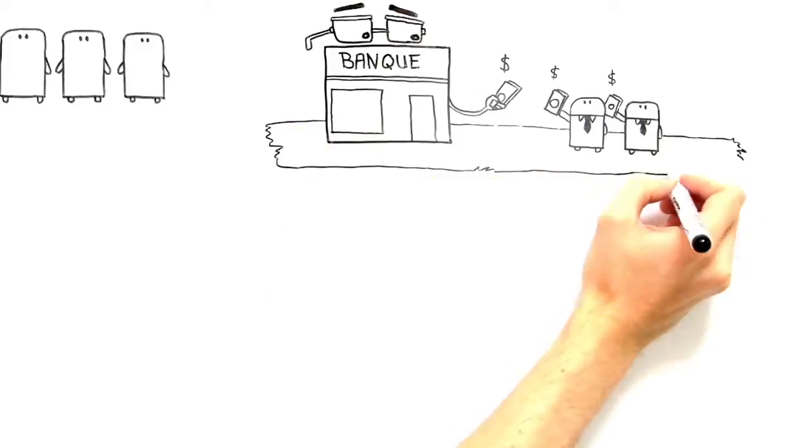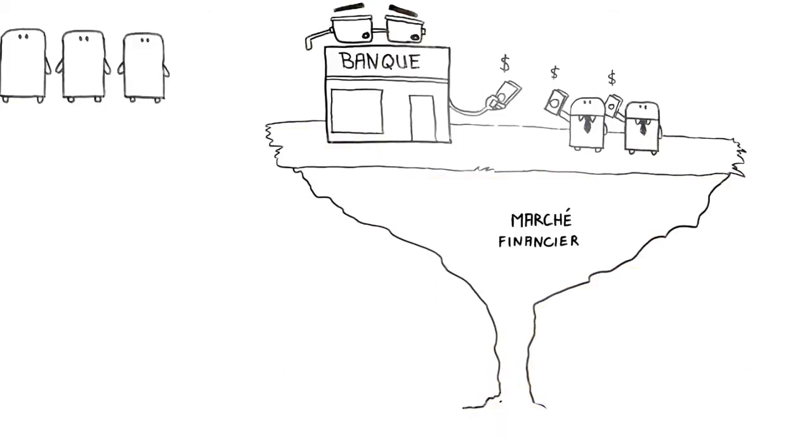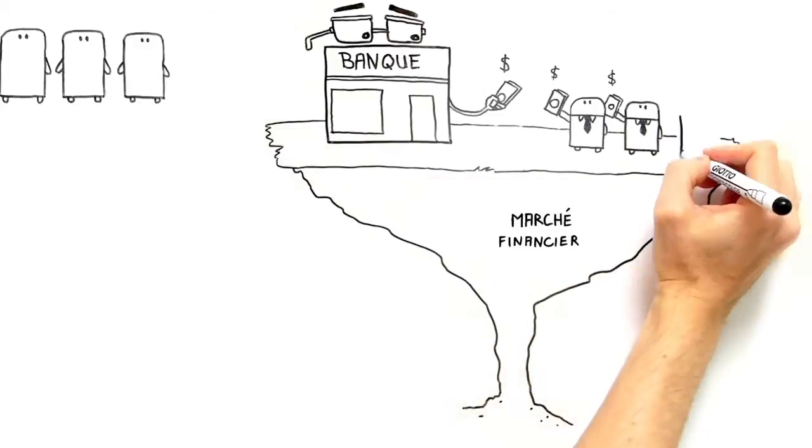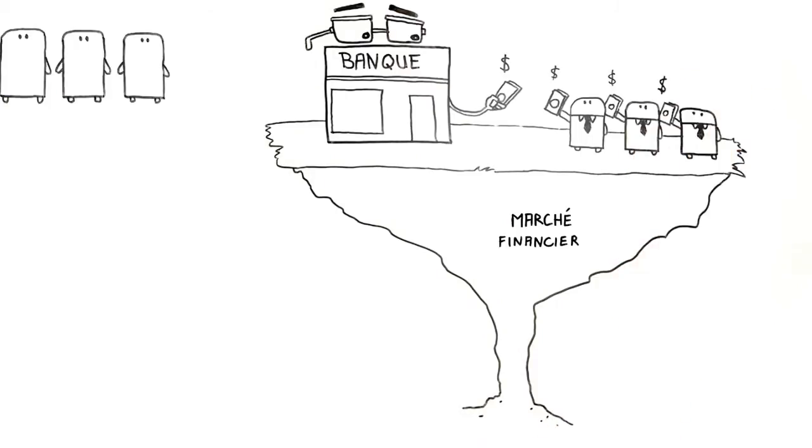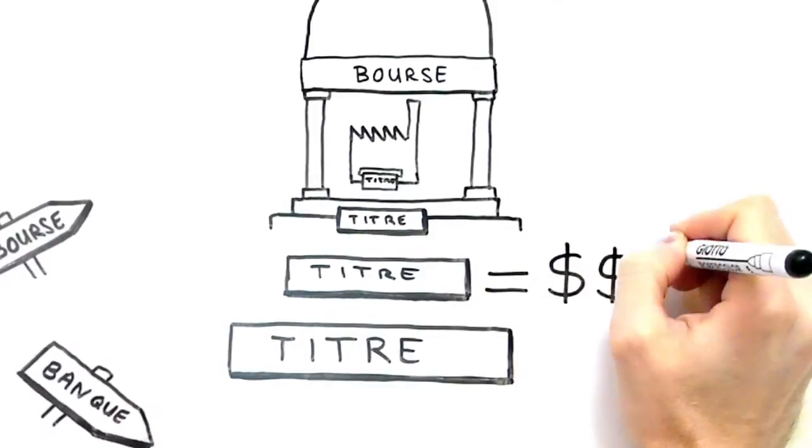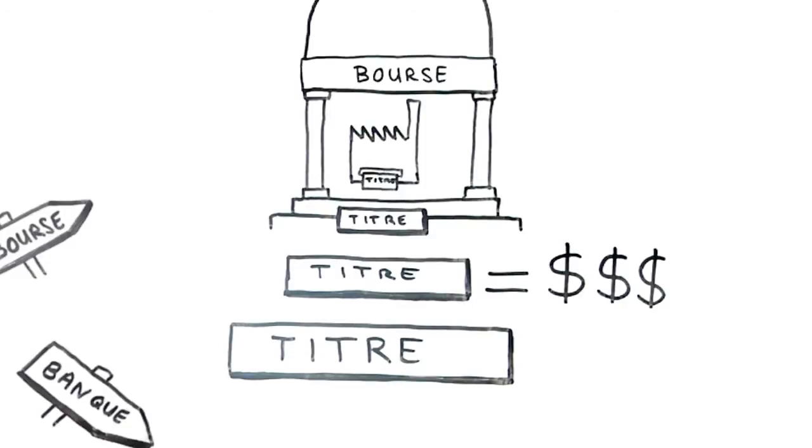These securities are then bought and sold in the financial markets. The price of the securities depends on how many investors are interested in them, or in other words, the relationship between the supply of and demand for the securities.